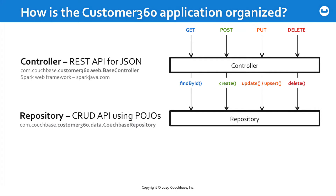The controller is going to, in turn, invoke methods exposed by a class we've named CouchbaseRepository. This is exposing a very straightforward create, read, update, delete API with methods like FindById, Create, Update, and Delete, but also an upsert method that is going to be explained as we go along. This class is where most of your work in the labs will be done.